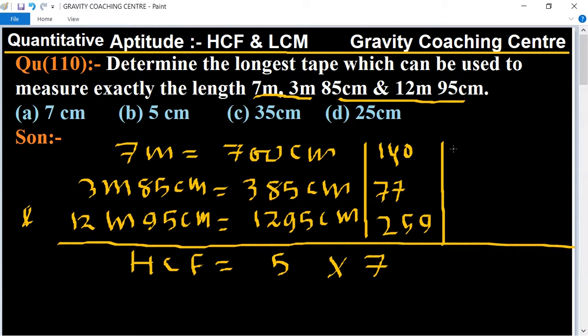So 140 divided by 7 equals 20, and this one 11, and 37. So 20, 11 and 37 have no common factors. So HCF equals 5 times 7 equals 35.